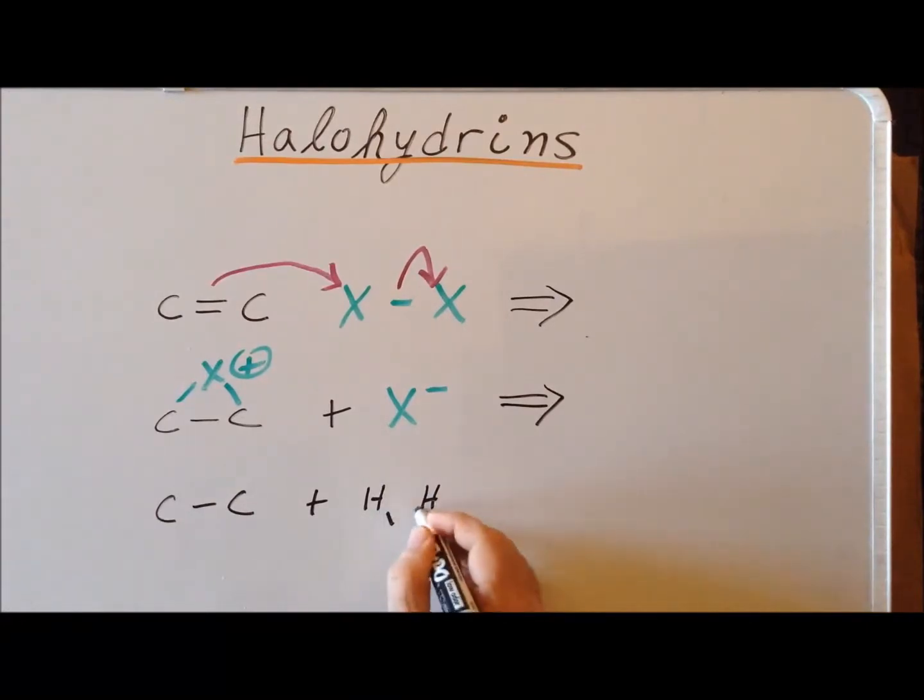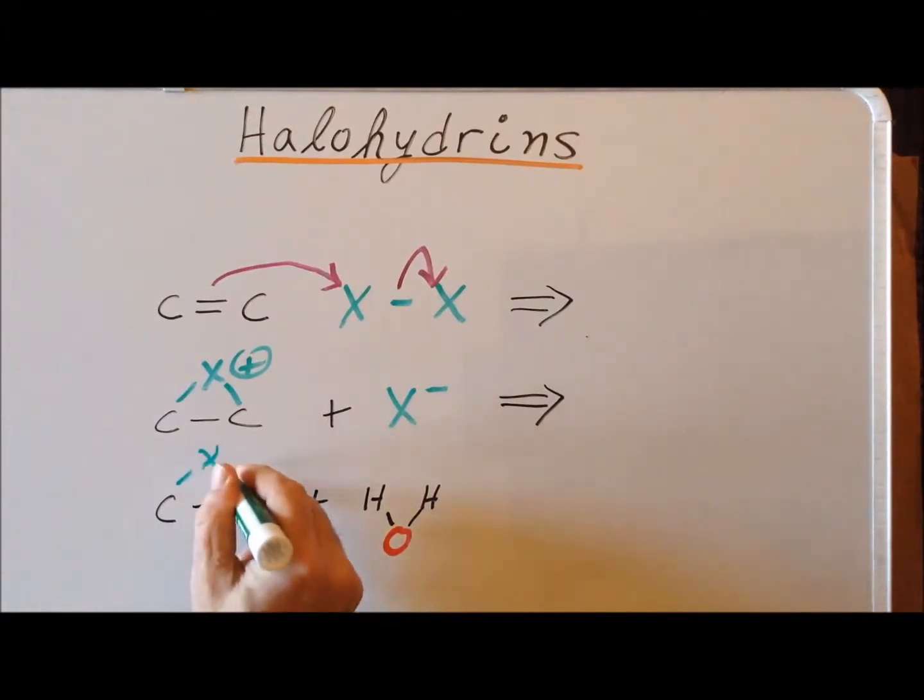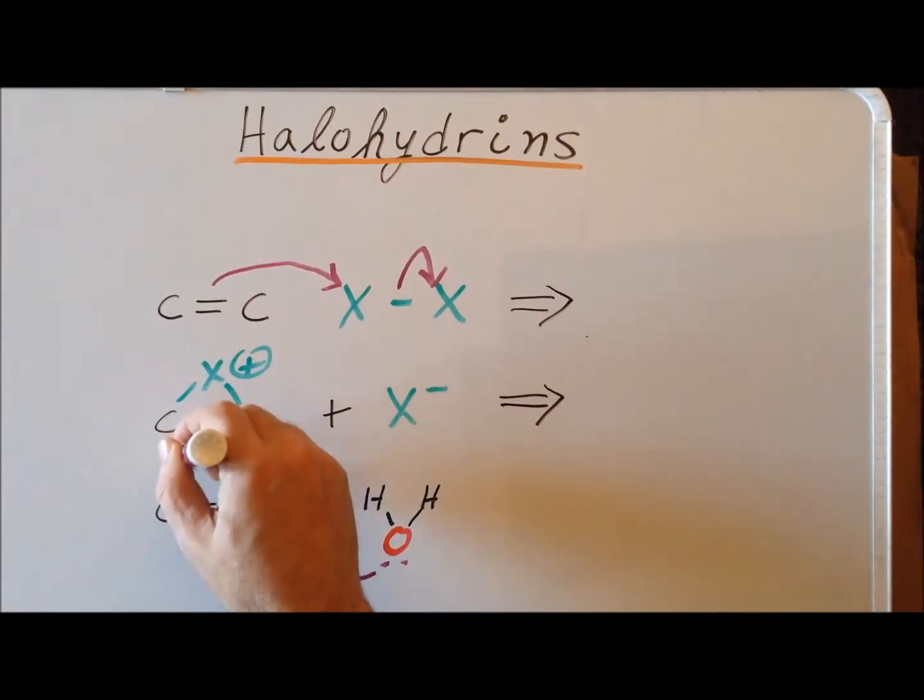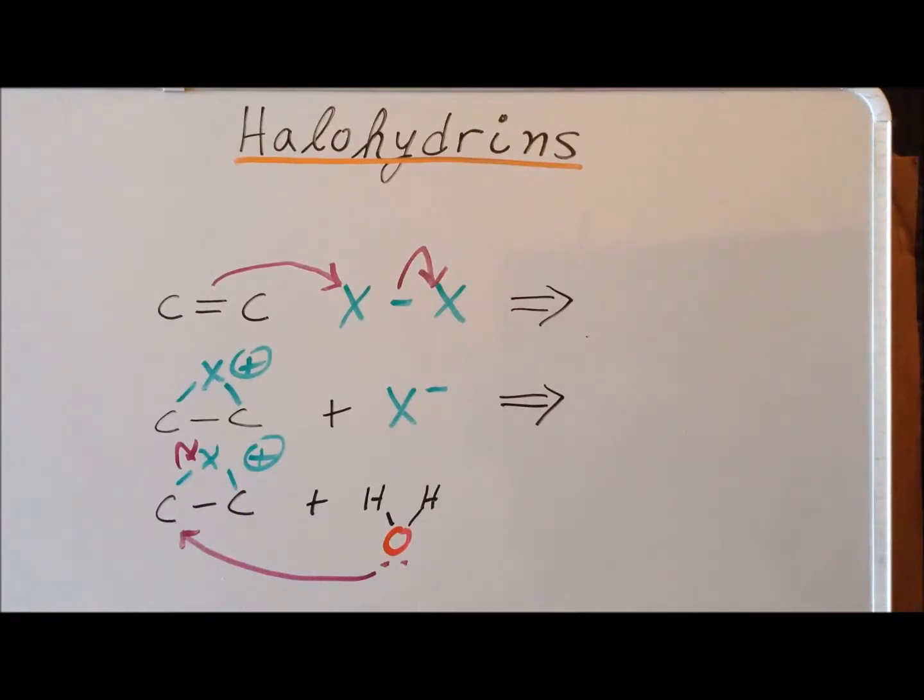In the first step, then we have a nucleophilic attack of the oxygen of water onto one of the carbons in this three-membered ring. One of the carbon-halogen bonds breaks, leaving the electrons on the halogen. And we get a protonated alcohol.